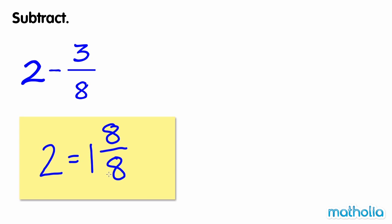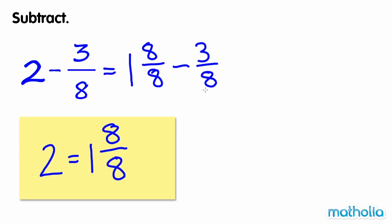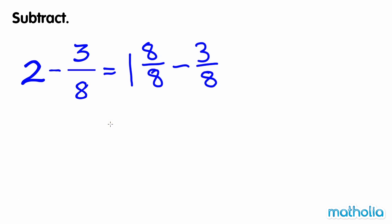So we can rewrite the equation as 1 and 8 eighths minus 3 eighths. The denominators of the fractions are the same, so we can subtract the numerators. 8 minus 3 equals 5, so 2 minus 3 eighths equals 1 and 5 eighths.